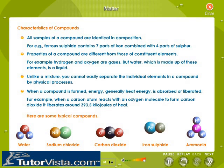All samples of a compound are identical in composition. For example, ferrous sulphide contains seven parts of iron combined with four parts of sulphur. The properties of a compound are different from those of its constituent elements. For example, hydrogen and oxygen are gases, but water, which is made up of these elements, is a liquid.